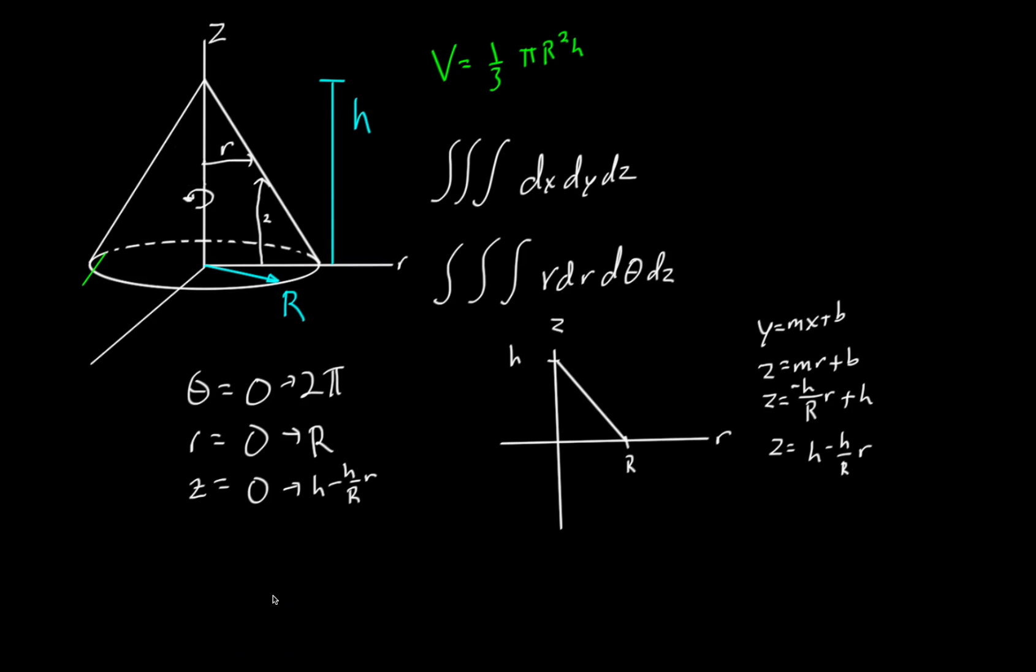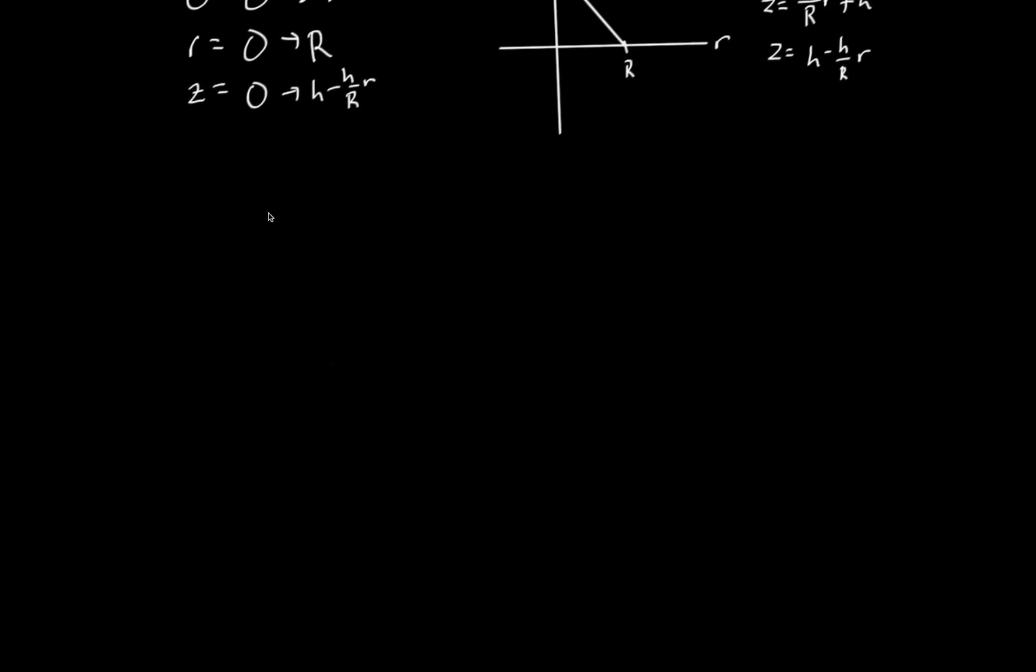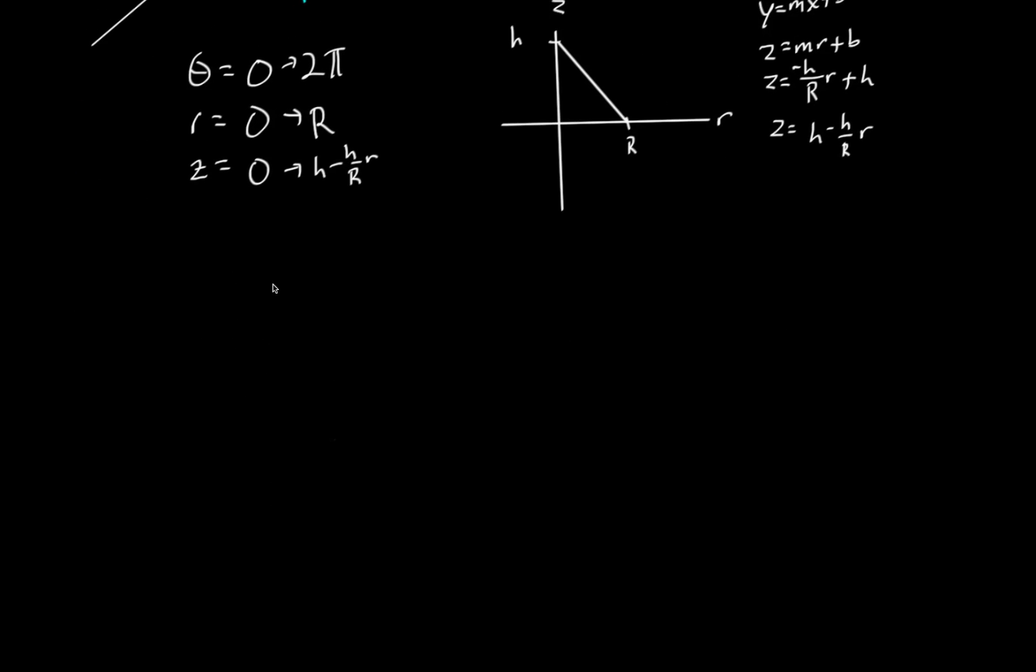So let's set this up and evaluate it. Triple integral of r dz d theta dr, with bounds: r from 0 to h minus h over capital R times r, theta from 0 to 2 pi, and r from 0 to capital R.